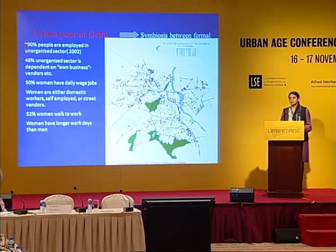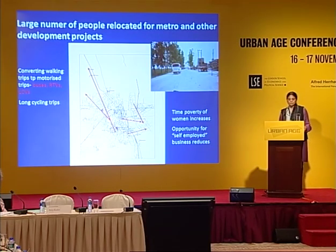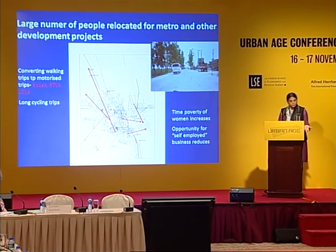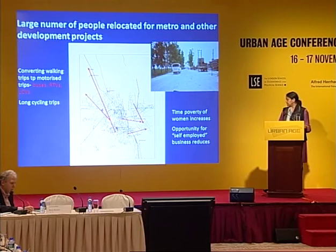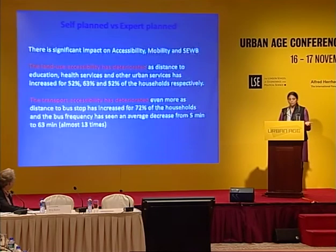The first case study is more to do with urban planning. This is a map of Delhi where all the little stars show low-income settlements — informal settlements, slums — spread all over. These are the people where the majority are walking to work. By policy in the last 5 to 10 years, more than 70,000 households have been moved out of the city for development projects including metro projects. As a result, all non-motorized trips get converted to motorized trips, exposure to high-speed traffic increases, time poverty of women increases, and opportunity for self-employment reduces. This kind of planning is contributing to more traffic crashes.